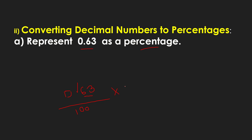Then for percentage, when you are showing percentage, you multiply by 100. Cross out the zeros. So we have 63 percent. Very simple.